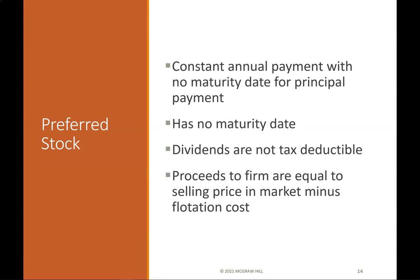Preferred stock: Preferred stock has a constant annual payment with no maturity date for principal payment, no maturity date, and dividends are not tax deductible. Proceeds to the firm equal the selling price minus flotation costs. The cost of preferred stock KP = D / (P − F), where D is the annual dividend, P is the price of the preferred stock, and F is flotation costs per share.